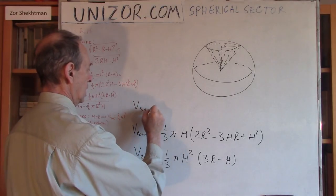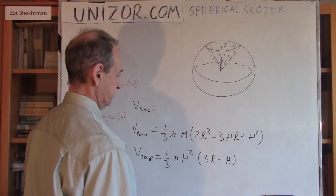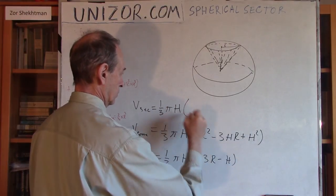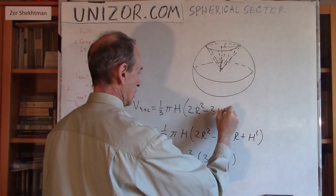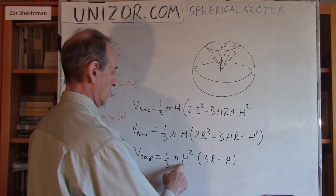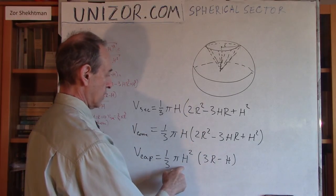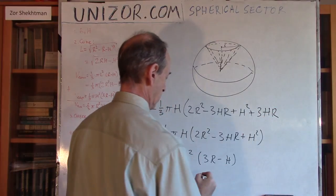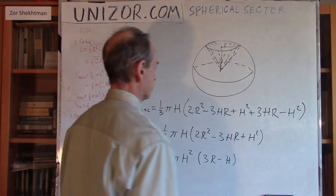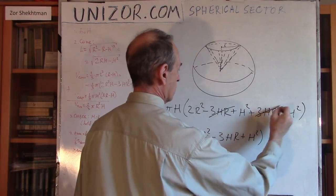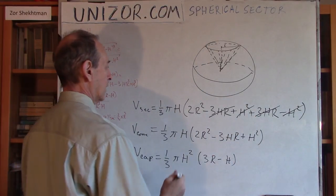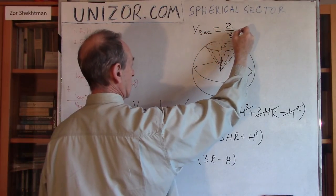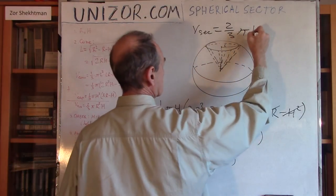Now, the volume of the sector is equal to sum of these, right? So, one-third π H, 2R square minus 3HR plus H square. Now, I have only one H outside of the parenthesis, so it should be plus 3HR and minus H square.